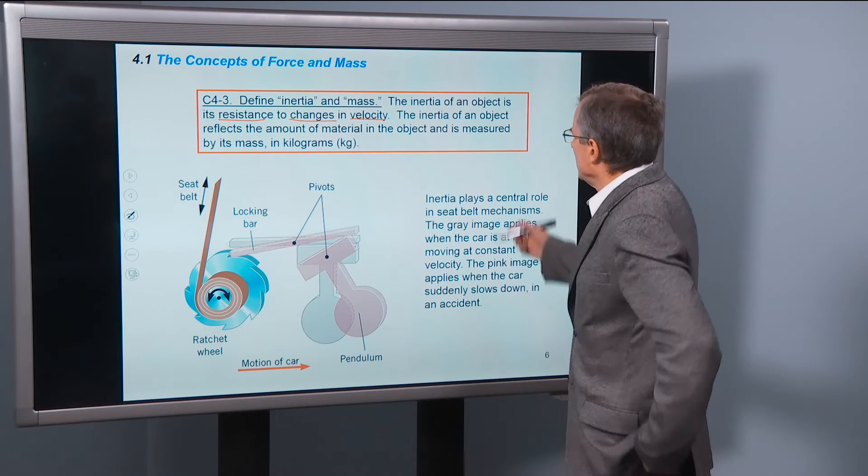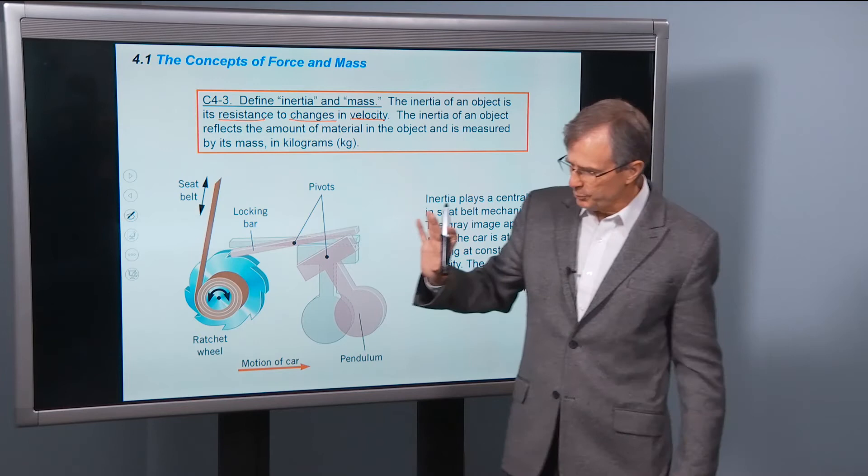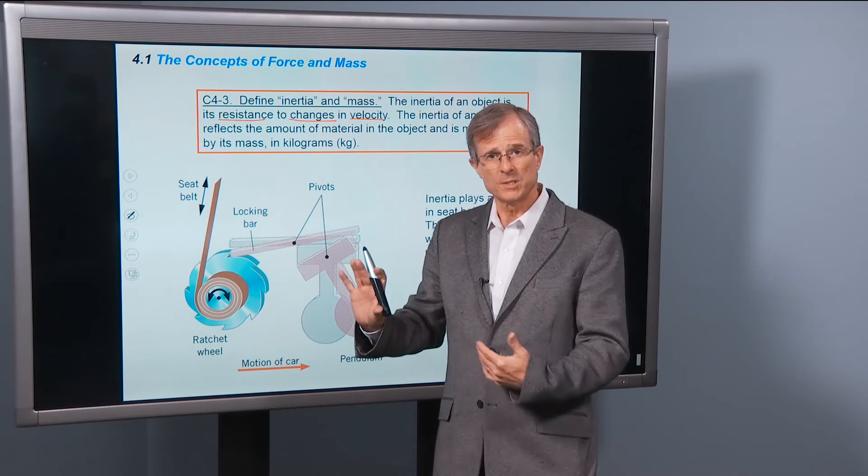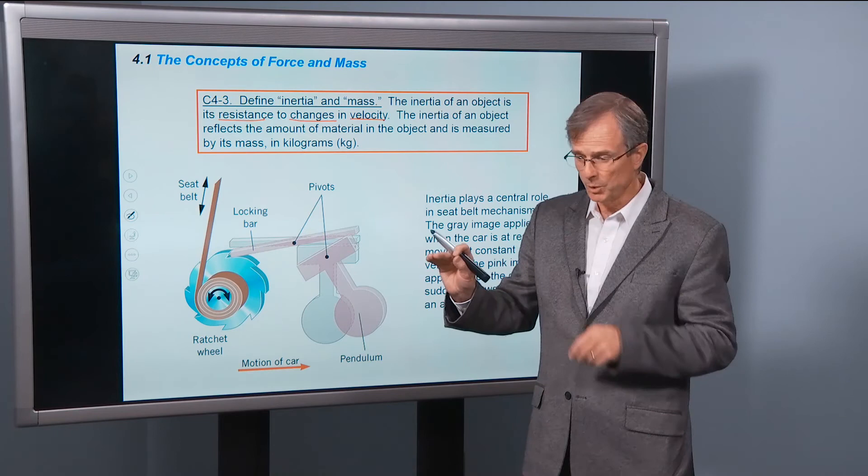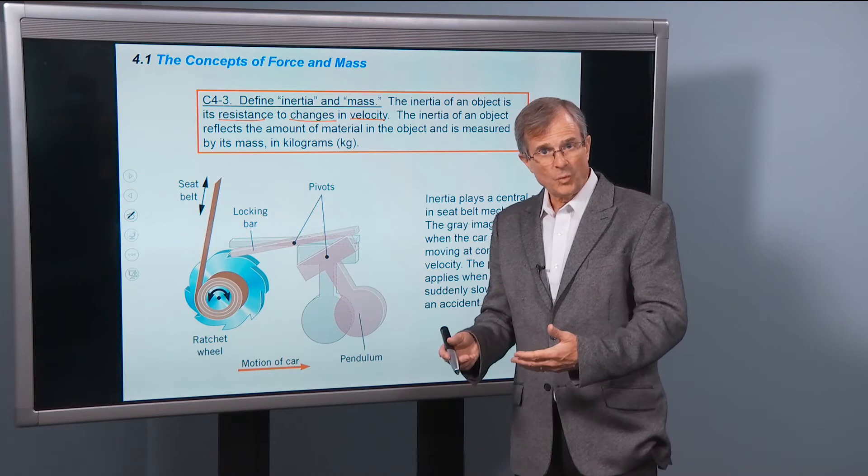So the inertia of an object reflects the amount of material in an object. The bigger the object, the bigger its resistance to changes in its velocity. If you've got a big old stone here and you push on it, it's going to resist changing its velocity from zero to something finite. Compared with if you have a fly or whatever, a very low mass item, it will be easy to change its velocity. So the amount of material in an object is reflected in the inertia as well.